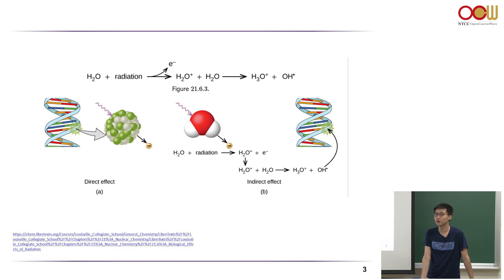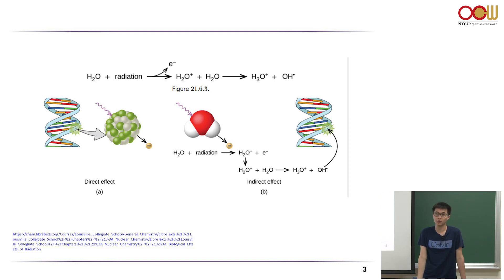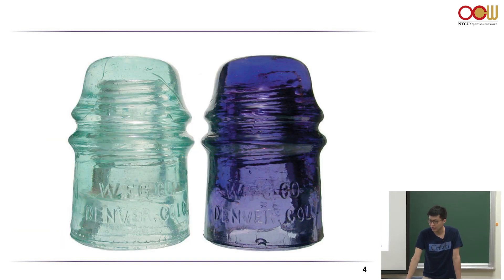For biological systems, radicals are bad. This hydroxyl radical is an oxidizing species — it's going to oxidize your lipids and fat. If it oxidizes DNA, it's going to cause problems during the transcription process. When radiation irradiates your DNA, mutation will happen, or it can completely destroy the genetic information stored in DNA and RNA. Radicals can also attack biological molecules.